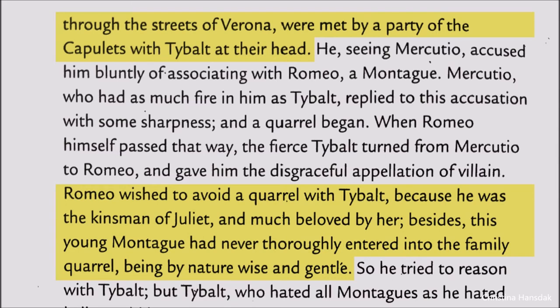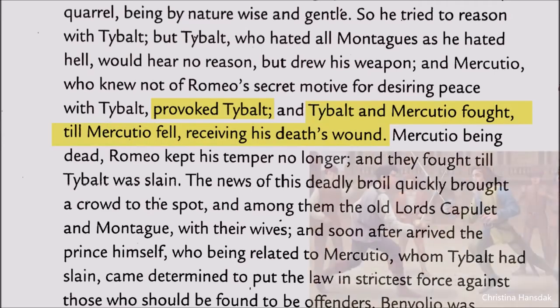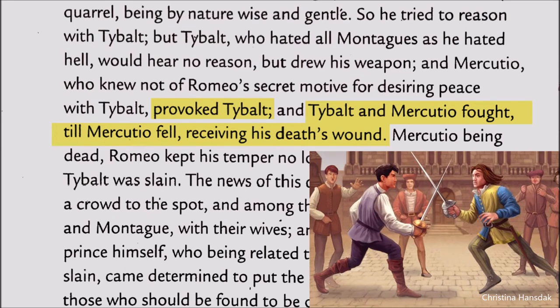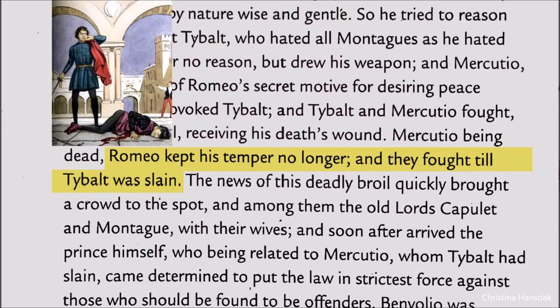Romeo sought love and peace and nothing else. But the situation was such that Mercutio was unable to read Romeo's secret motive, and so he provoked Tybalt. Tybalt and Mercutio fought, and in this fight Mercutio was wounded and died. Seeing his friend dead, Romeo's anger emerged and he slew Tybalt.